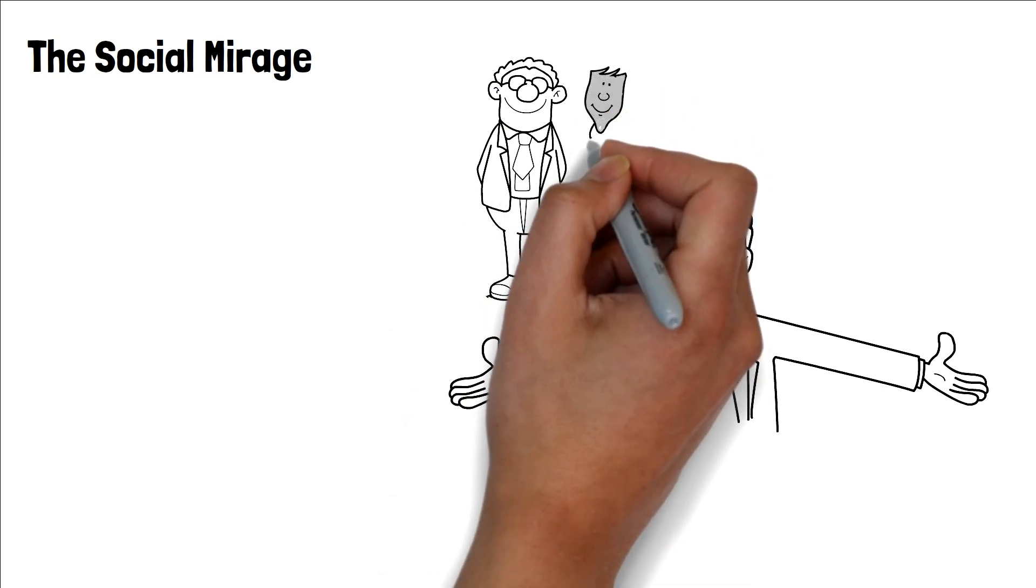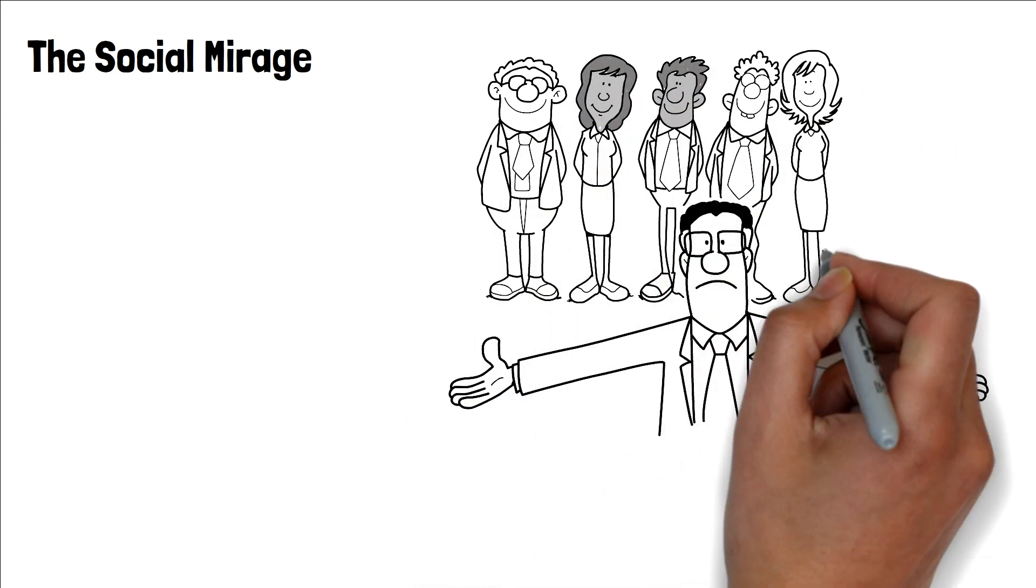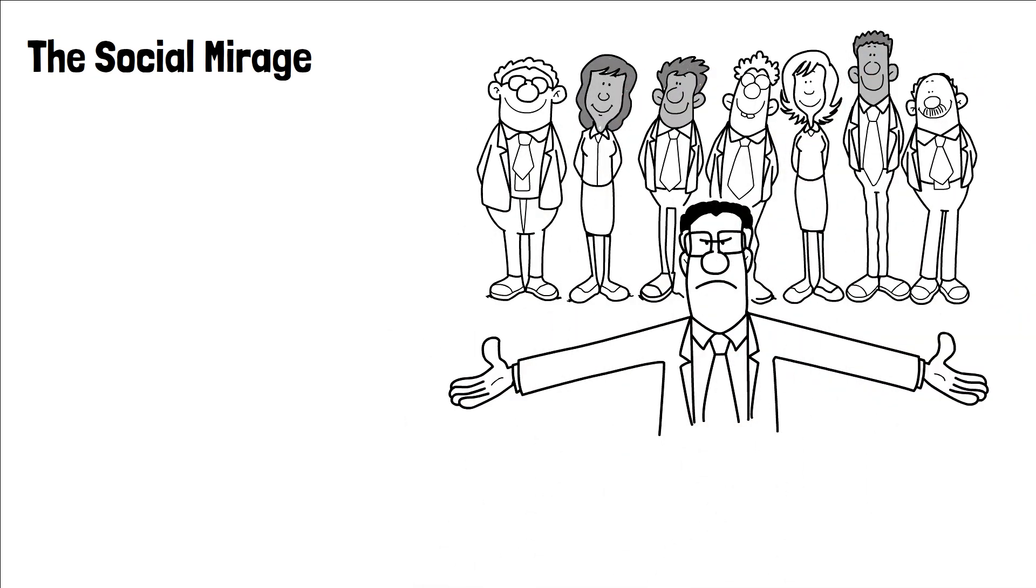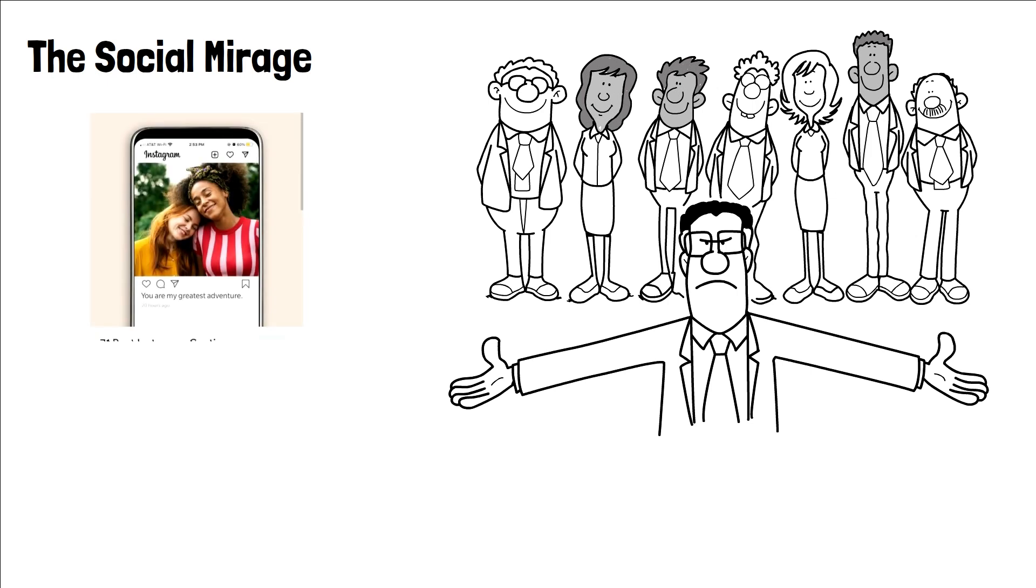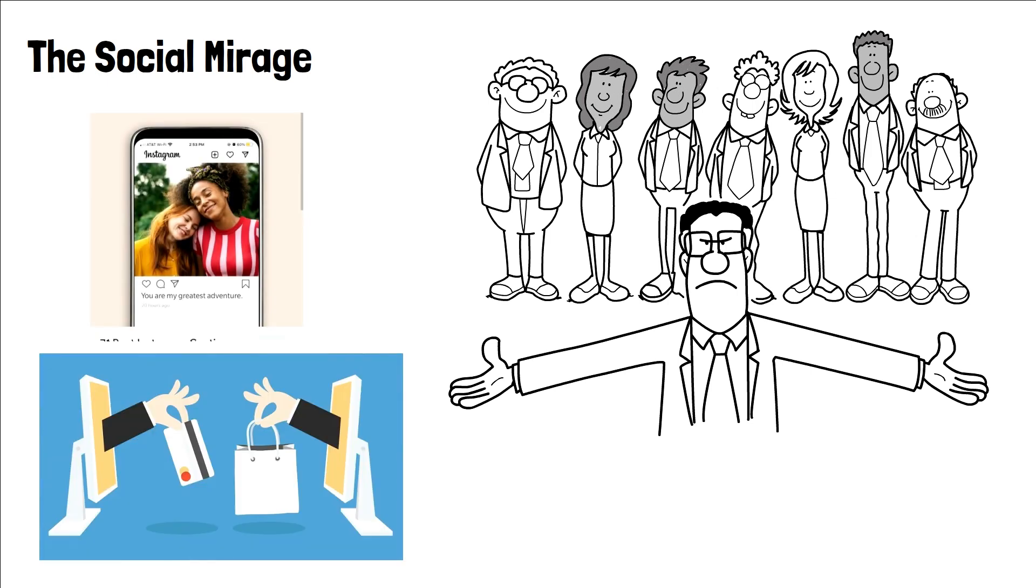The Social Mirage. The spotlight of society primarily shines on outward displays of wealth and prosperity. Every Instagram post of a luxury vacation or a Facebook update about a new purchase adds to the mounting pressure to keep up.